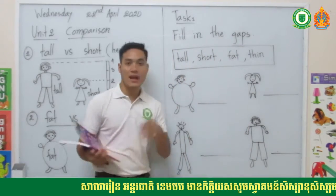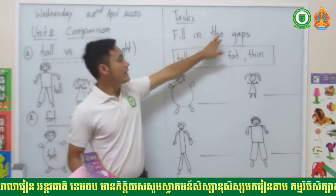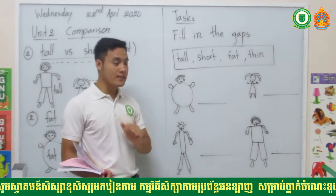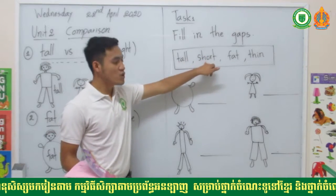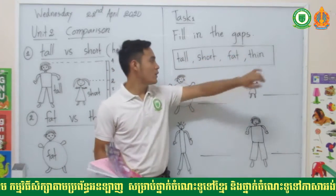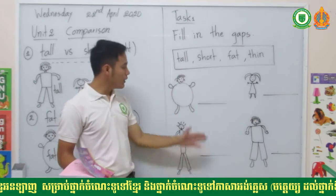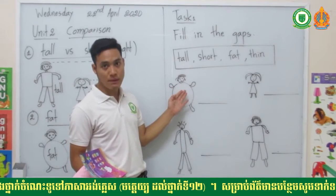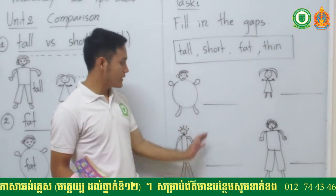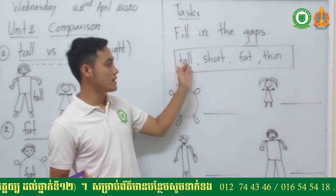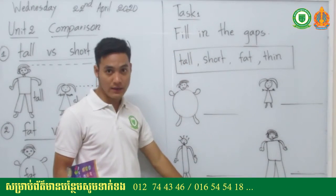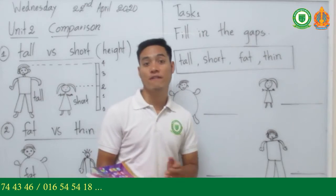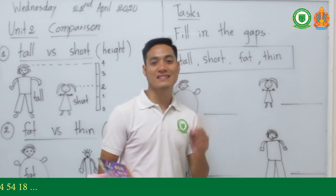Here is your first task — fill in the gaps. We have four words: tall, short, fat, and thin. There are four pictures numbered one to four. Draw them in your notebook or on paper, then complete the gaps using the words in the box above. Look carefully and complete before submitting. That's all for part one — see you in the next lesson.